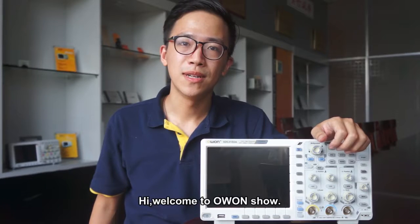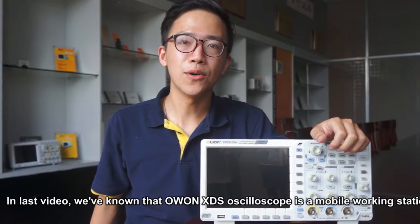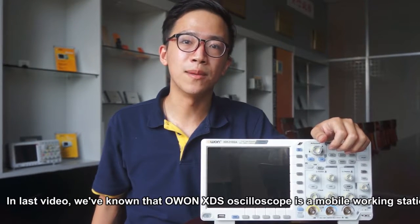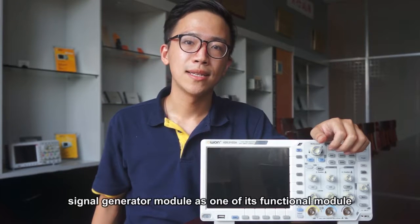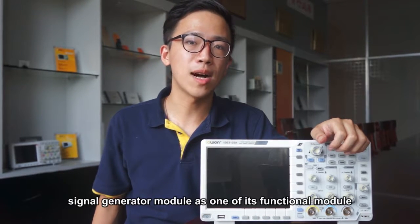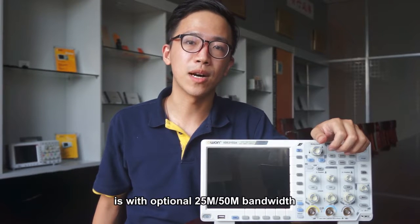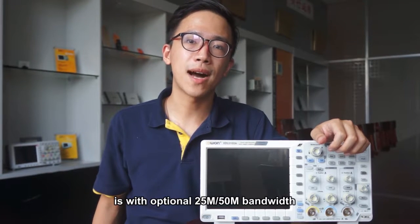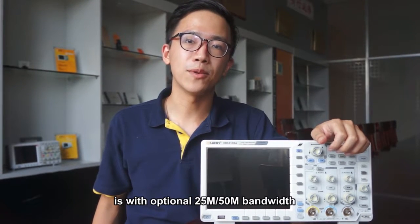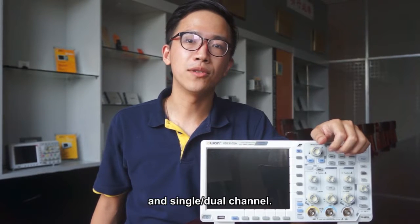Hi, welcome to OWON Show. In last video, we know that OWON XDS oscilloscope is a mobile working station. Signal generator module as one of its functional modules is with optional of 25 or 50 megahertz bandwidth and single or dual channel.